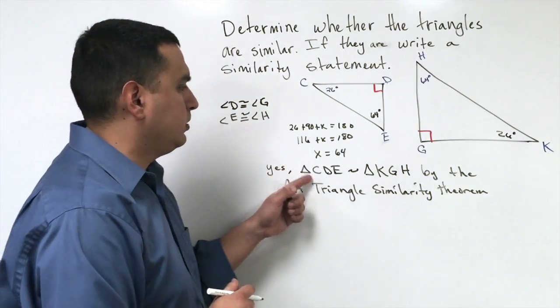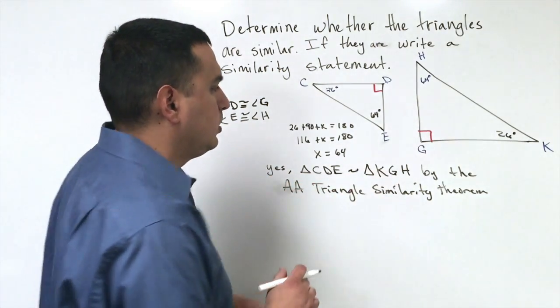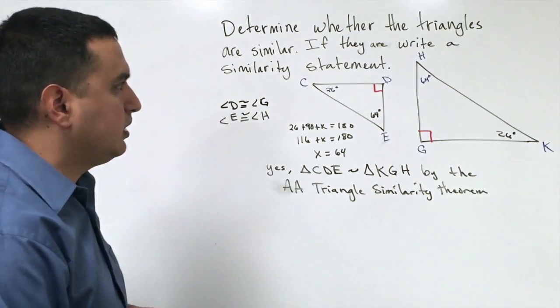So triangle CDE is similar to triangle KGH by the AA triangle similarity theorem.